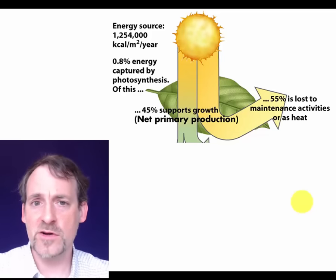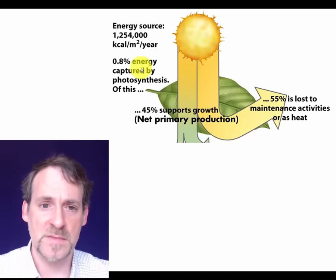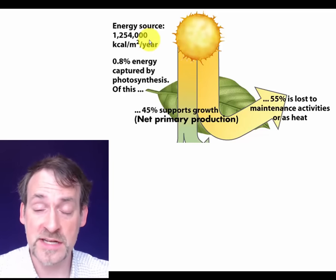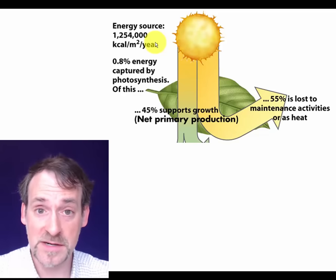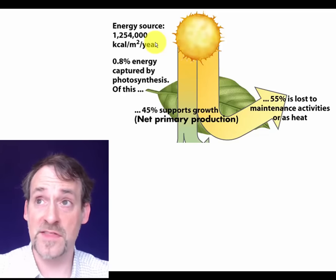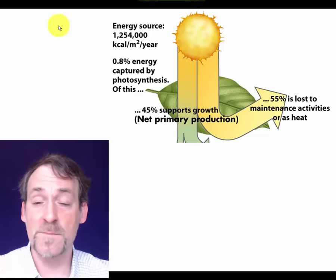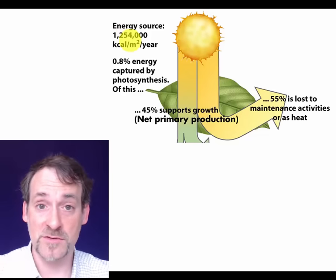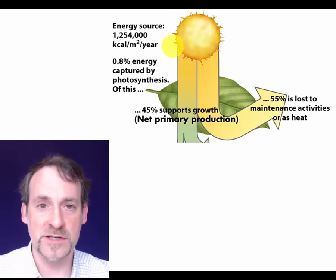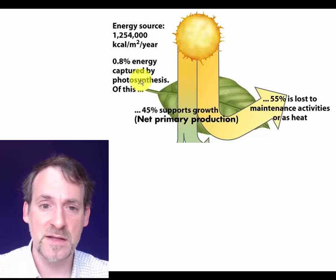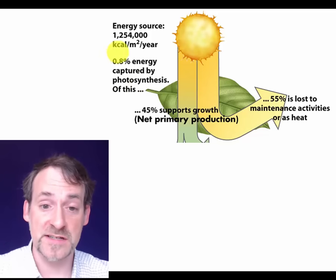What happens to energy as it passes up a food chain? There's an incredible amount of energy hitting this planet every day — over a million calories per square meter per year. Given that your daily allowance is probably 1,000 to 2,000 calories, that's a tremendous amount of energy, enough to keep a very large number of people alive per square meter of land per year, if we could just capture it. Plants are really pretty good at capturing energy, but even they only pick up less than 1% of that energy.